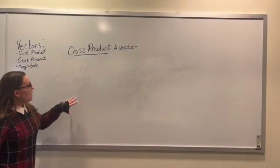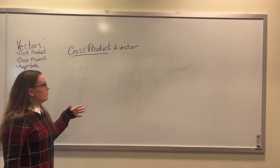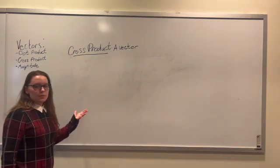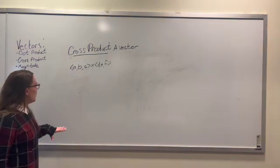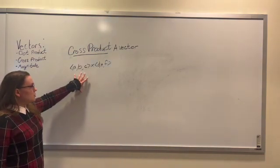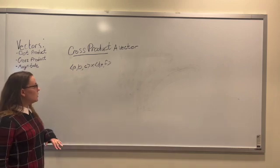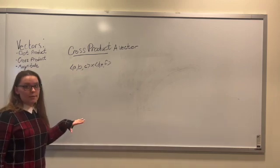So when we take the cross product of two vectors, we get a vector. To find the cross product between two vectors is kind of complicated, so bear with me here for a second. All right, let's say we wanted to find the cross product between these two vectors. We would need to take the determinant of a matrix.